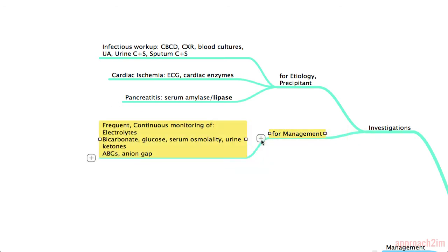For investigations guiding management, you need frequent and continuous monitoring of electrolytes, especially potassium, because hyperkalemia and other electrolyte abnormalities can result in arrhythmias and other fatal consequences. You should also monitor bicarbonate, glucose, serum amylase, urine ketones, ABGs, and the anion gap.